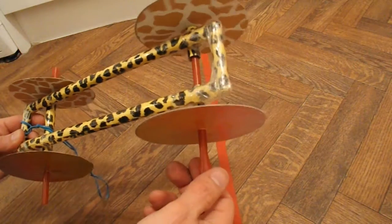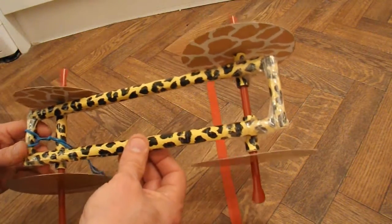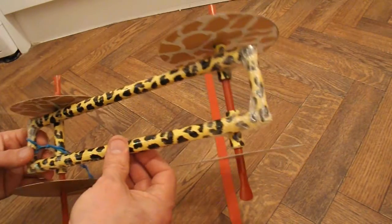The axles are drinking straws. The chassis is rolled up card. Rolled into a tube.